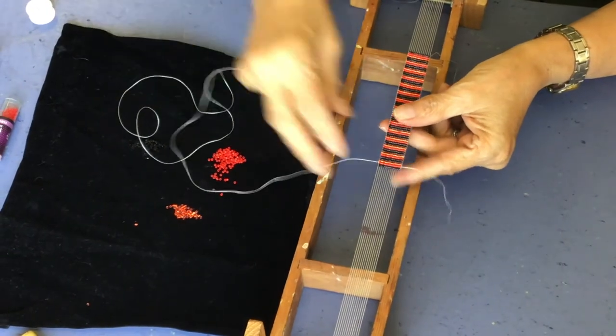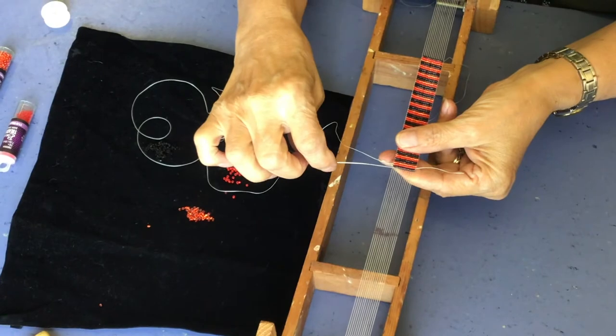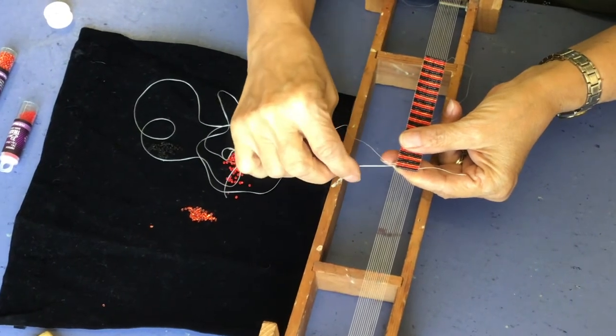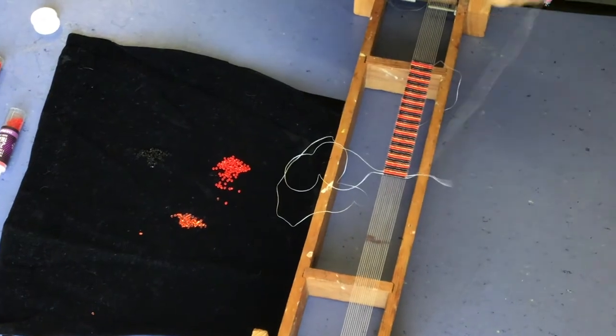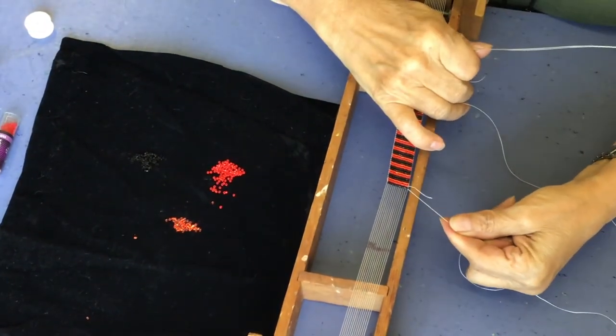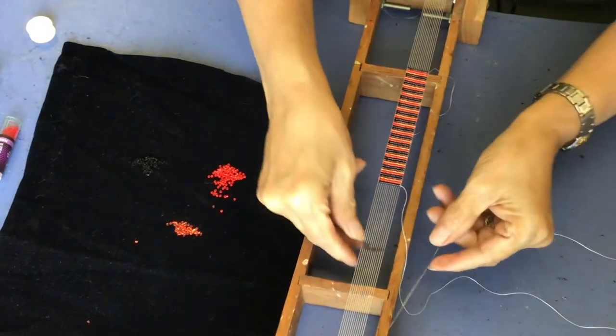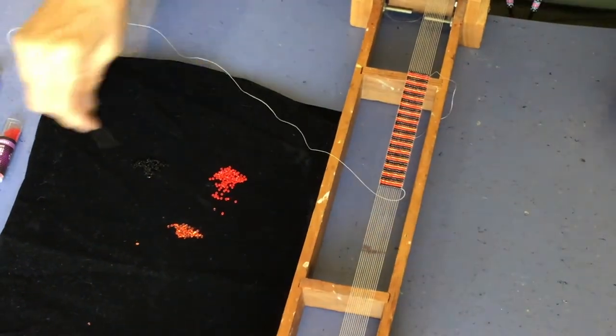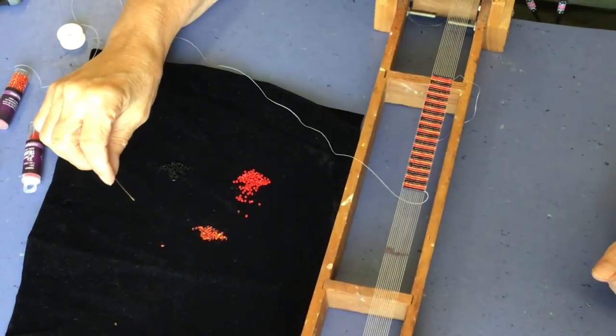Pull it through. But don't go all the way through yet. Leave a little tail. Go back through your first row. Like so. And this is when you gently pull that tail in. Okay. So now you got your new thread and you just keep going. 12 more until you get as long as you want your bracelet to be.